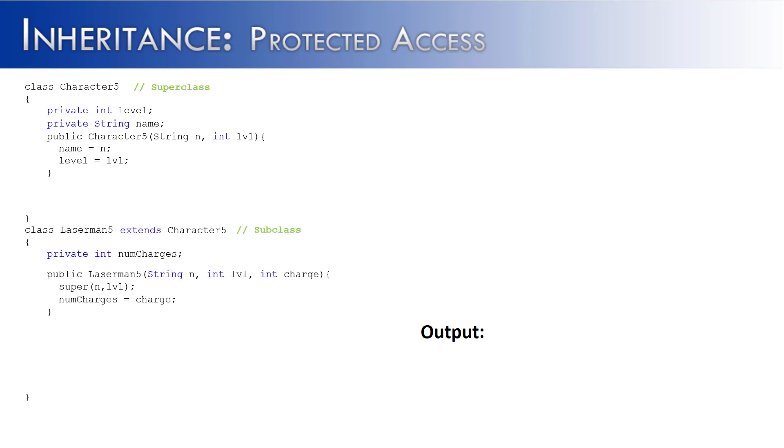Then we're going to have the subclass, Laserman5, which is going to extend the Character5 class. It's going to have one instance variable called numcharges. Its constructor is going to take in all the information for both the superclass and the subclass, pass the information up to the superclass, and keep numcharges down in the subclass. The subclass is going to have one method called outputInfo, and its sole purpose is to output the subclass's instance variable numcharges.